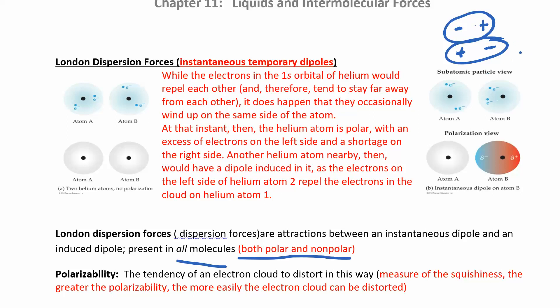You can induce a dipole moment. How easily you can induce a distribution of electrons is called polarizability. More easily polarized molecules can shift their electrons around, producing charges on both sides. These are not permanent dipole moments — they are just temporary. The more electrons you have, the stronger this force gets. This tends to increase with molar mass. So if you compare two molecules that both have London forces, the one with higher molar mass will have stronger London forces and therefore a higher boiling point.